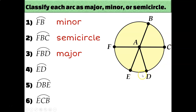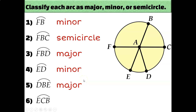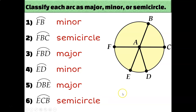Arc ED is a small arc — definitely less than 180 degrees, so it's a minor arc. Arc DBE is almost the entire circle, so it's a major arc. And arc ECB is exactly half of the circle — exactly 180 degrees — so we call it a semicircle.